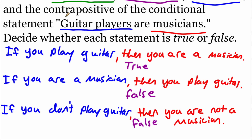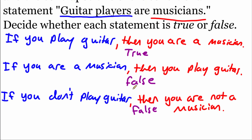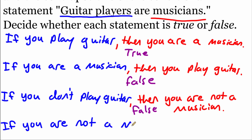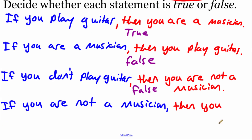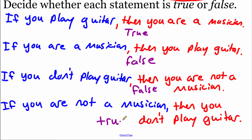Our last one is the contrapositive. For the contrapositive, we look at the converse and then negate each piece. The converse was: if you are a musician, then you play guitar. So the contrapositive says: if you are not a musician, then you don't play guitar. Is this true or false? If you're not a musician, that means you don't play any instrument at all — so this one is true.